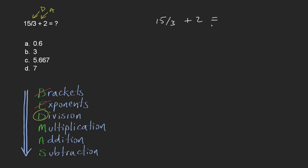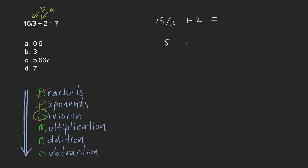So 15 divided by 3 is 5, and that just leaves the addition. 5 plus 2 is 7, and so the answer here is d) 7.